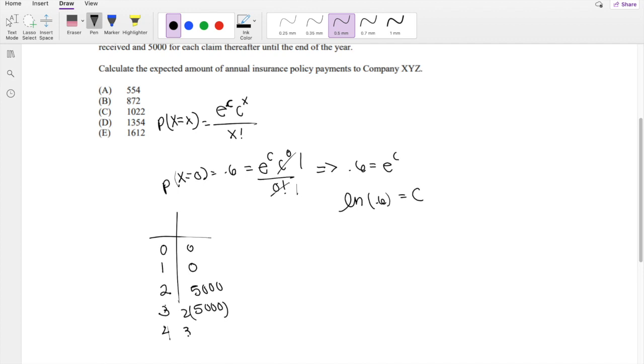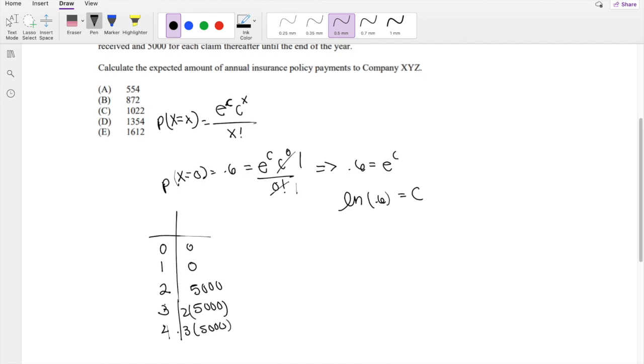So that would be $5,000 times 2. And then 4, it's going to be 3 of these, $5,000. Because after the fourth warranty claim, you're not just paying for the fourth one, which is just $5,000.